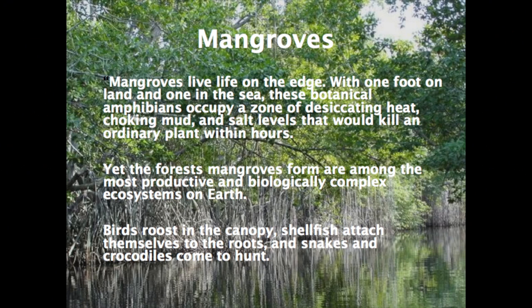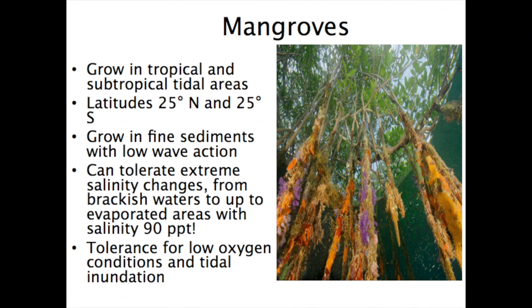Next is mangroves. Mangroves live life on the edge: with one foot in the land and one in the sea, these botanical amphibians occupy a zone of desiccating heat, choking mud, and salt levels that would kill an ordinary plant within hours. Yet the forests mangroves form are among the most productive and biologically complex ecosystems on earth. Mangroves grow in tropical and subtropical tidal areas from latitudes 25 degrees north and 25 degrees south, in fine sediments with low wave action, and can tolerate extreme salinity changes from brackish waters to up to 90 parts per thousand, as well as low oxygen conditions and tidal inundation.